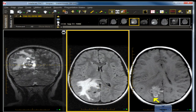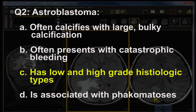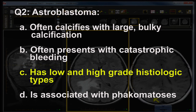Question 2: Astroblastoma. The correct answer is — C. Has low and high grade histologic types. That's a super difficult advanced question. Astroblastoma does calcify, but the calcifications are not large and bulky — they're punctate, micro-calcification. In oligodendroglioma, the calcifications are frequently somewhat finger-like and branching.